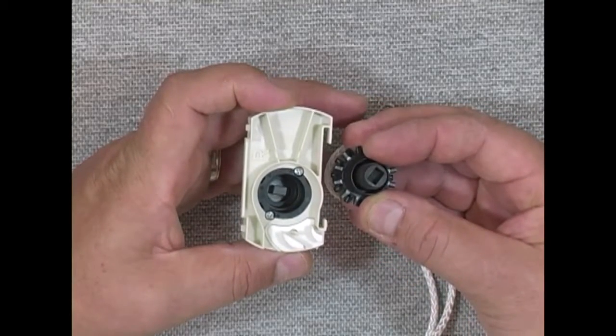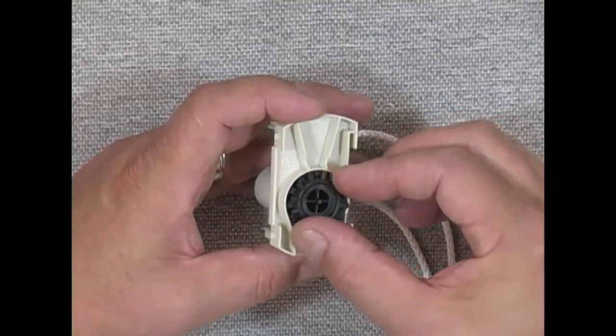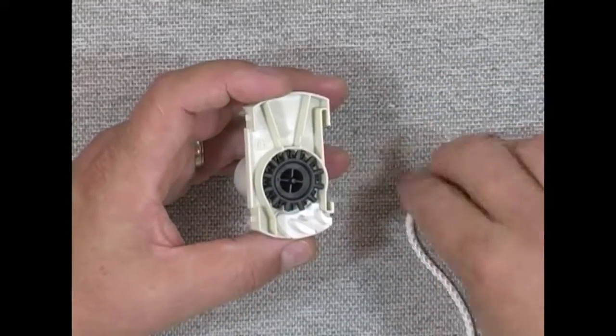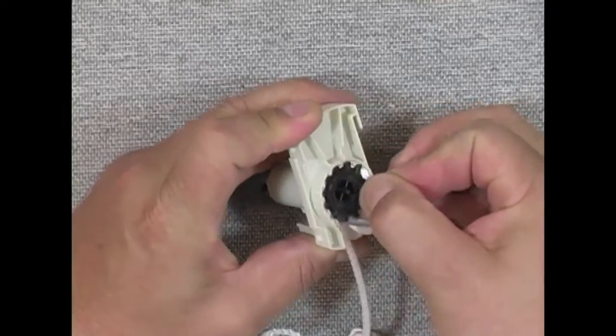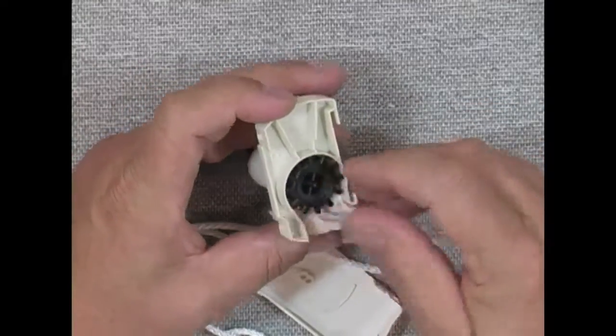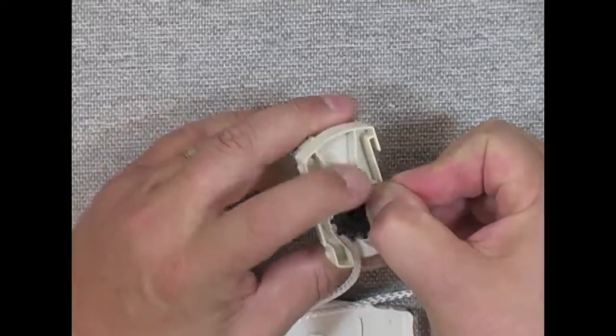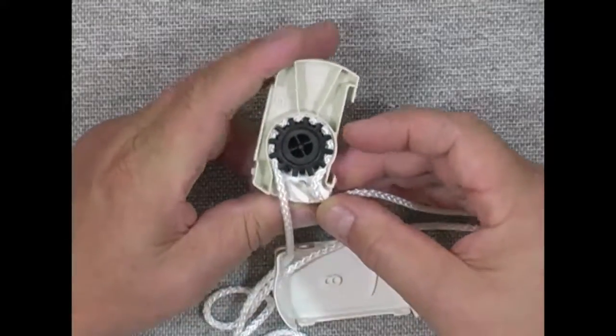I want to line those two up. If that pops out, just go ahead and rotate it until it drops into place. Drops in, press in while I'm walking the cord around the clutch. Press in, walk it around. Oops, it popped out again. Rock it into place. Make sure you push down while you're walking the cord around here, and it's going to walk right around.